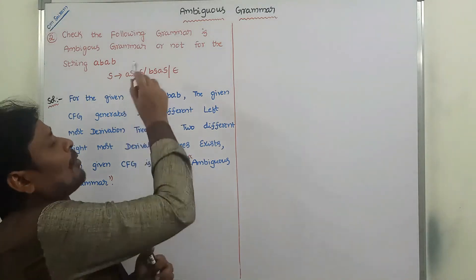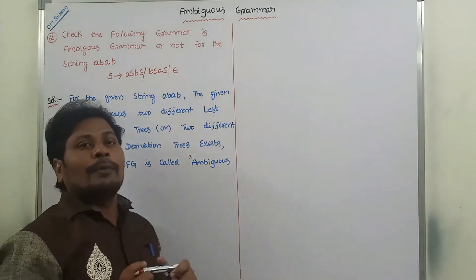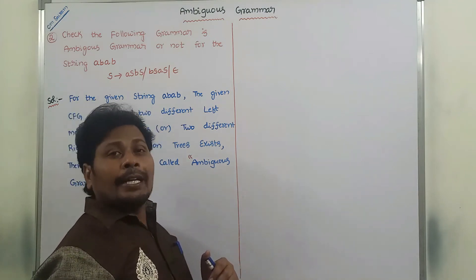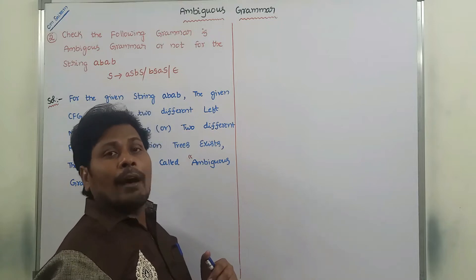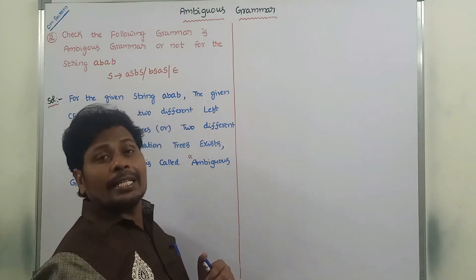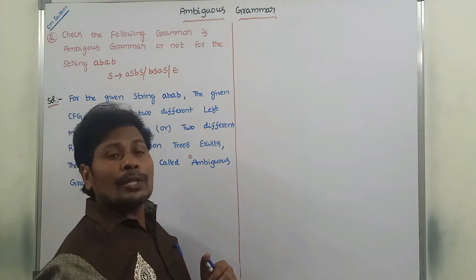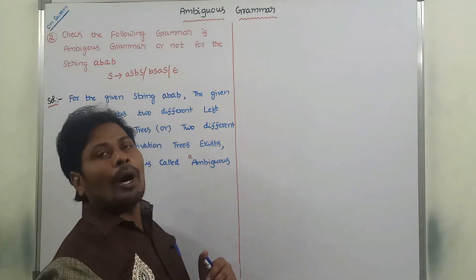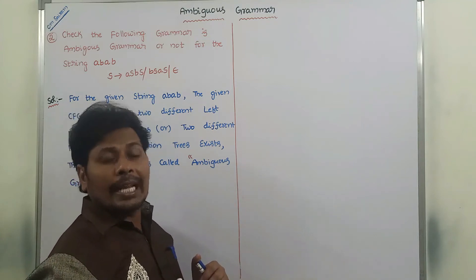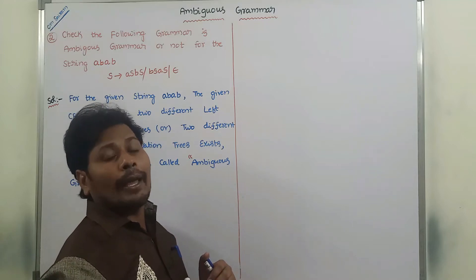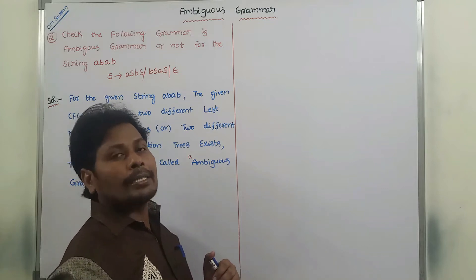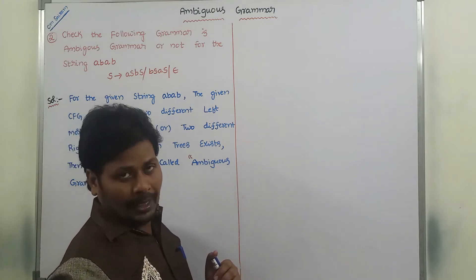Before going to that problem, first of all, what is ambiguous grammar? For the given terminal string, if the given context-free grammar generates two different leftmost derivation trees or two different rightmost derivation trees, then that given grammar is called an ambiguous grammar. Otherwise it is called an unambiguous grammar.